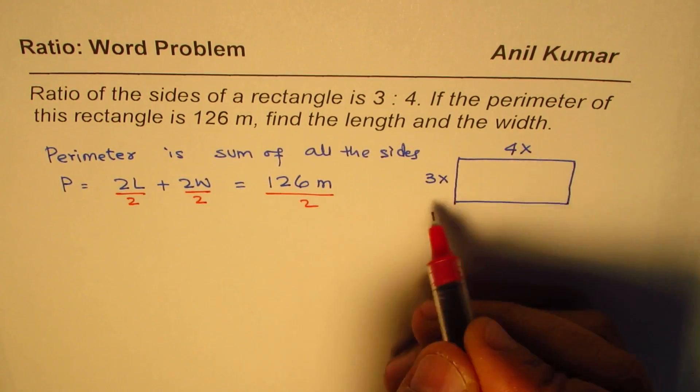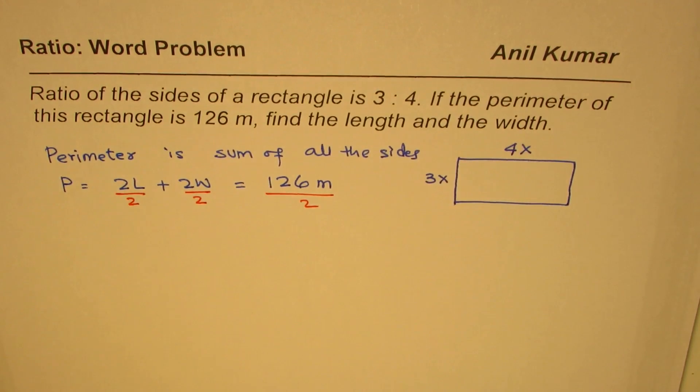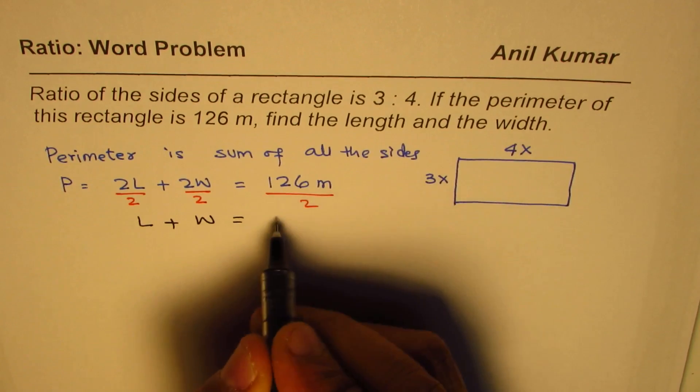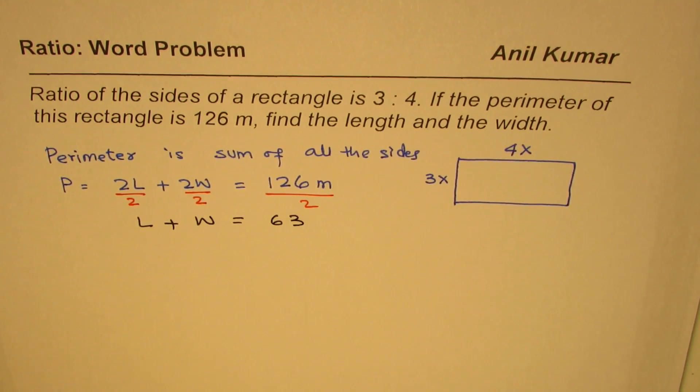right? So only adding length and width once, in that case, I get length plus width is equal to 126 divided by 2, which is 63. So that is the length plus width, 63.